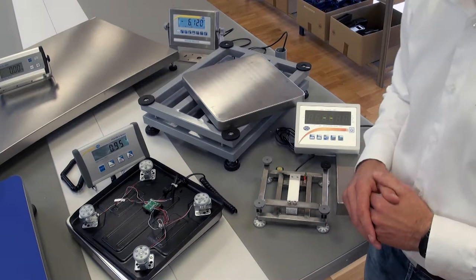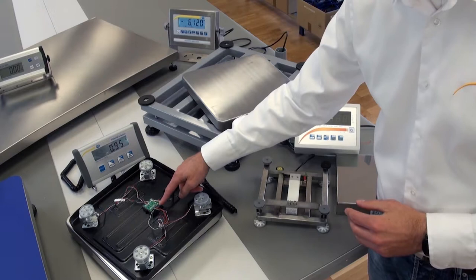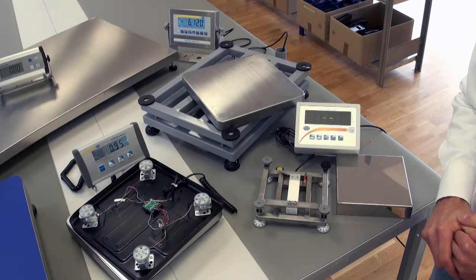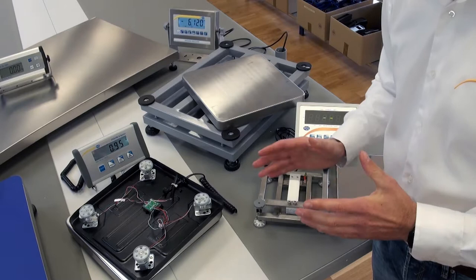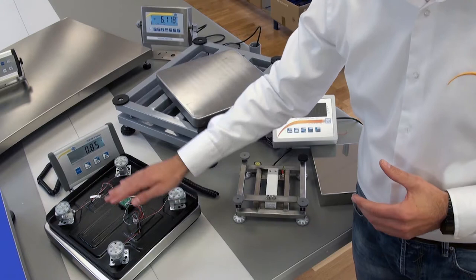The problem is that I have here four signals and have to bring these four signals to result. This works through either matched measuring cells or with the help of resistors in the electronics. If I do not do this aligning, the displacement of the load from corner to corner can produce different measuring results.